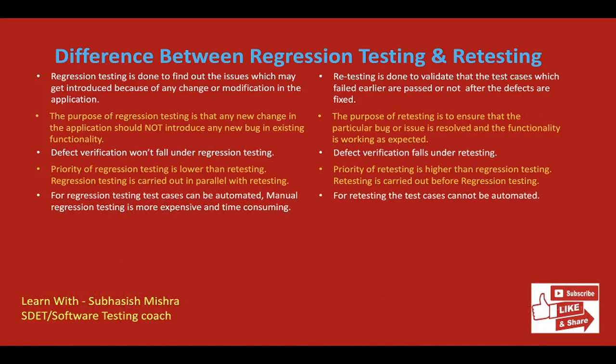For regression testing, test cases can be automated. Manual regression testing is more expensive and time consuming. Whenever we perform automation testing, we try to always automate our regression test cases because we re-execute the same test cases in each release, and it takes a lot of time if done manually — you need more people to execute it. If you automate it, it will take less time and be less expensive. For retesting, we don't always try to automate retest scenarios because maybe it is a defect and it is a one-time effort. But depending upon the situation, you can automate the retest cases.